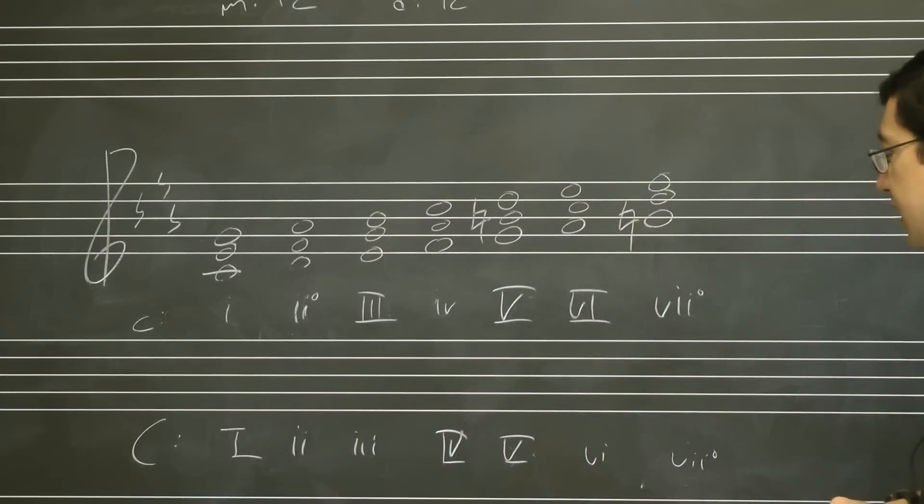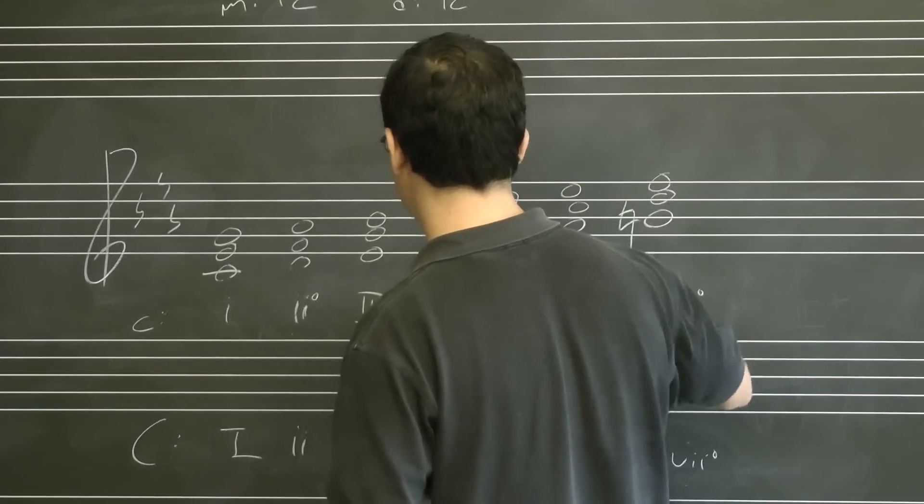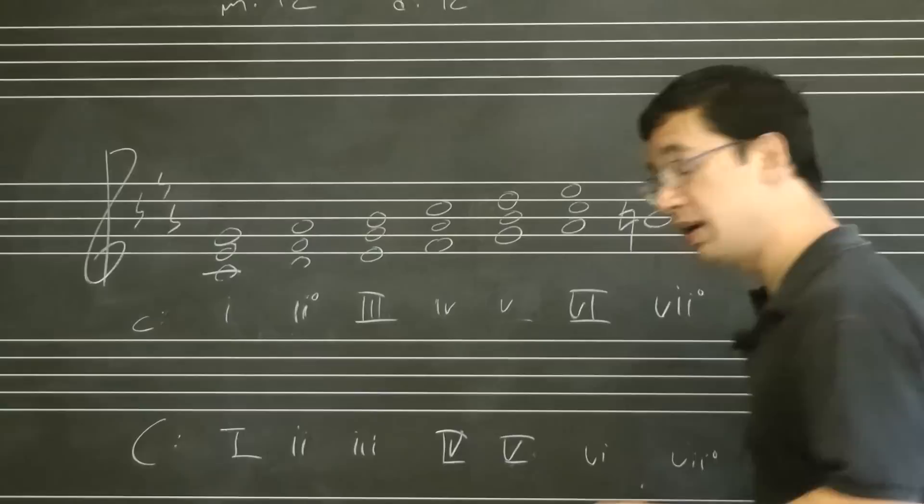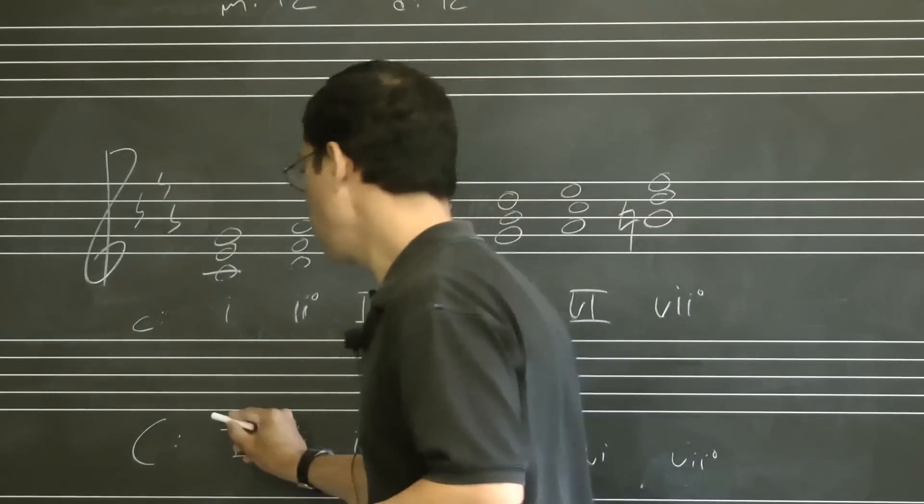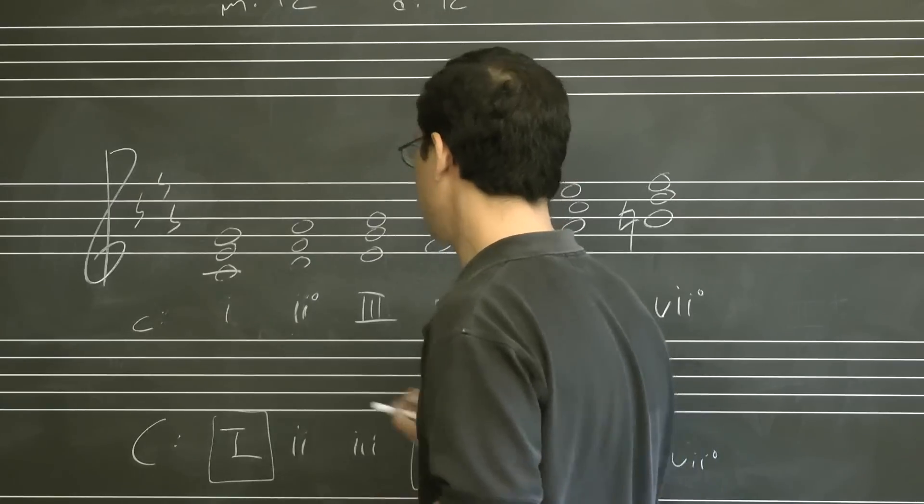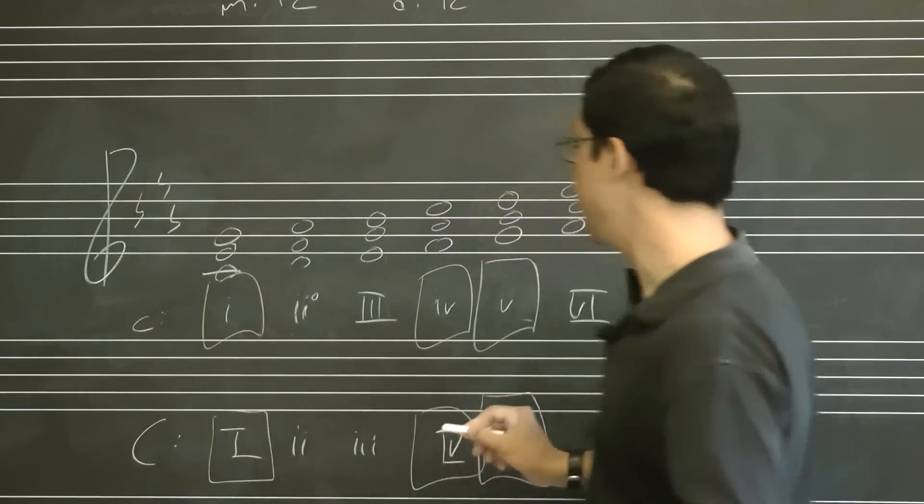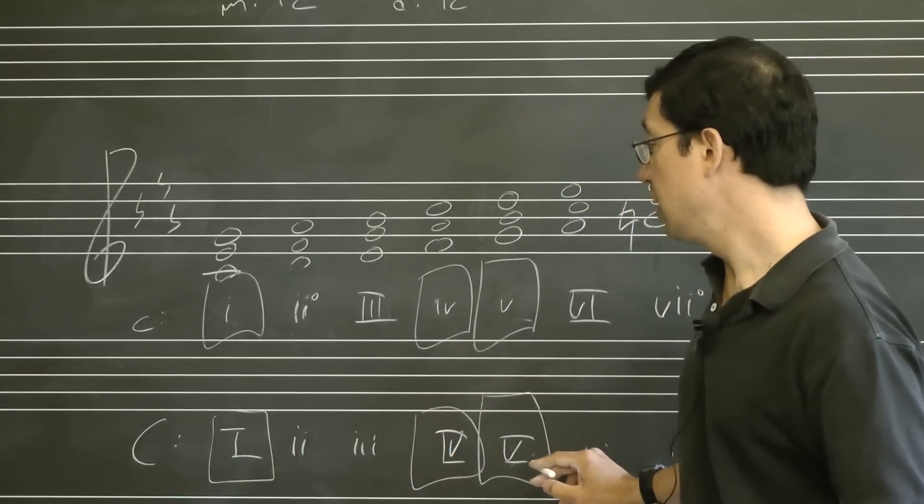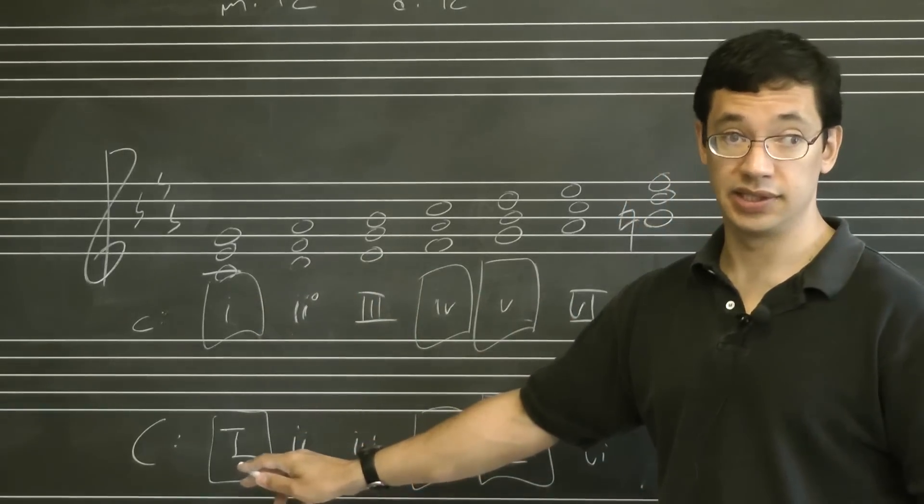The second is that if we go back to the natural minor, suppose that we had a minor five chord. You remember how we talked about three chord songs? Those use one, four, and five. What I want you to observe is that in major and in natural minor, one, four, and five are the chords that share the same quality as the tonic triad.